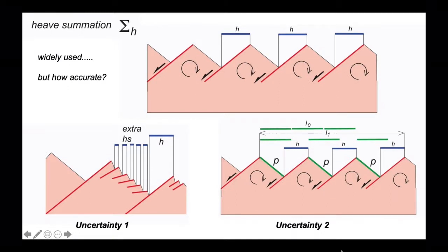So we have two competing uncertainties here which challenge the accuracy of heave summation as a way of estimating upper crustal stretching. We have uncertainty 1, which is the possibility that we're missing small faults that would add to the heave.